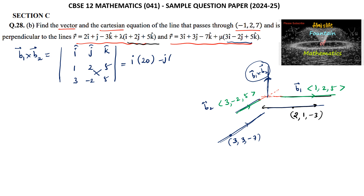Minus J times of (1×5 minus 3×5), that is 5 minus 15, which is -10. So minus J times (-10) gives plus 10J. Next, plus K times of (1×(-2) minus 3×2), that is -2 minus 6, which is -8.